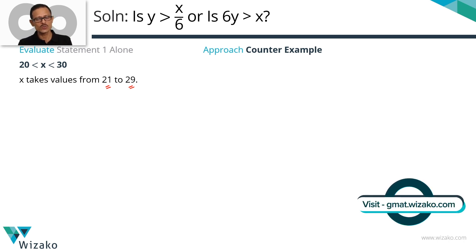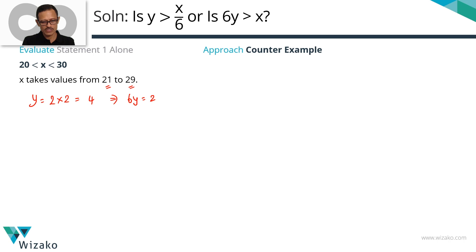The approach I'm going to take is one of counter example. Let's compute the value of Y. For all of these values of X, the tens place is 2. So the value of Y is equal to 2 times the tens place of the value of X. For all these numbers, the tens place is 2. So the value of Y for this set of information is equal to 4. So therefore, what will be the value of 6Y? 6Y is equal to 4 times 6 which is equal to 24. We need to determine whether 24 is greater than X.